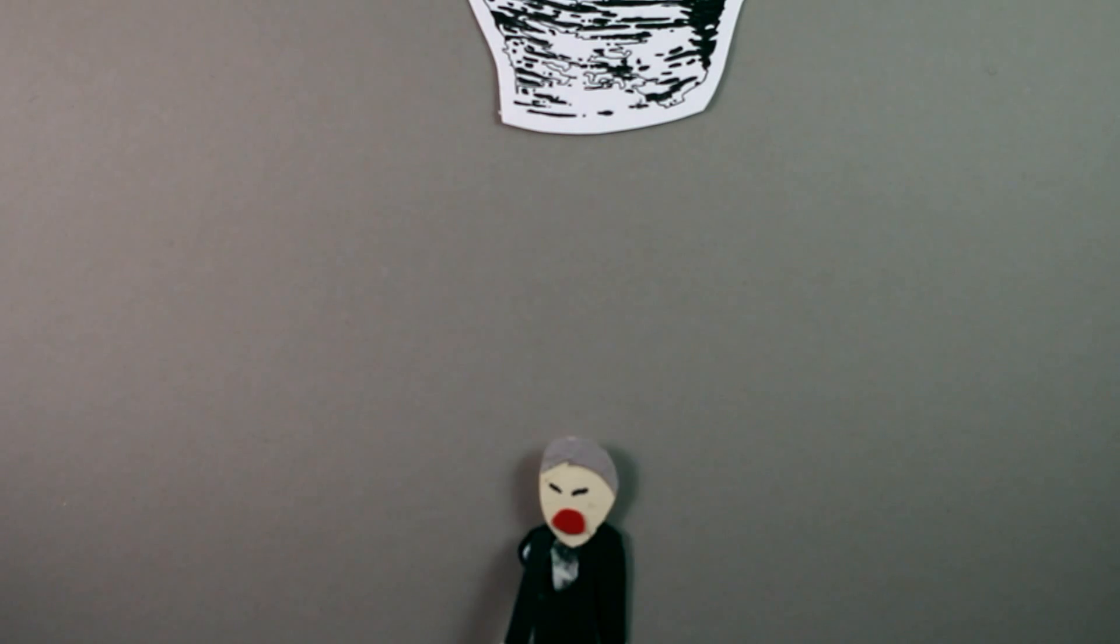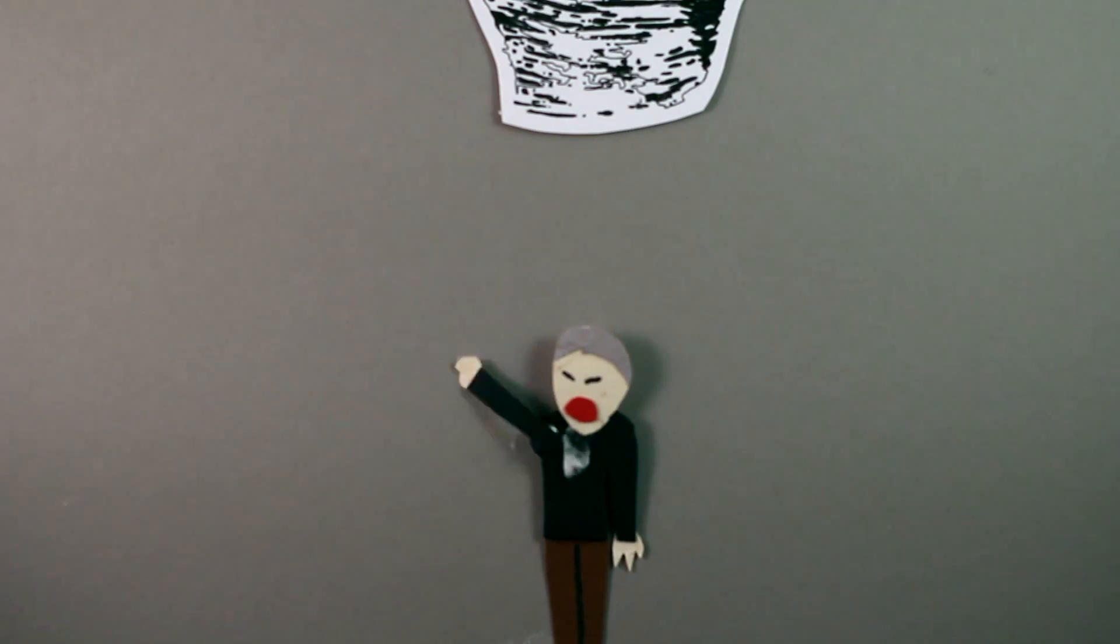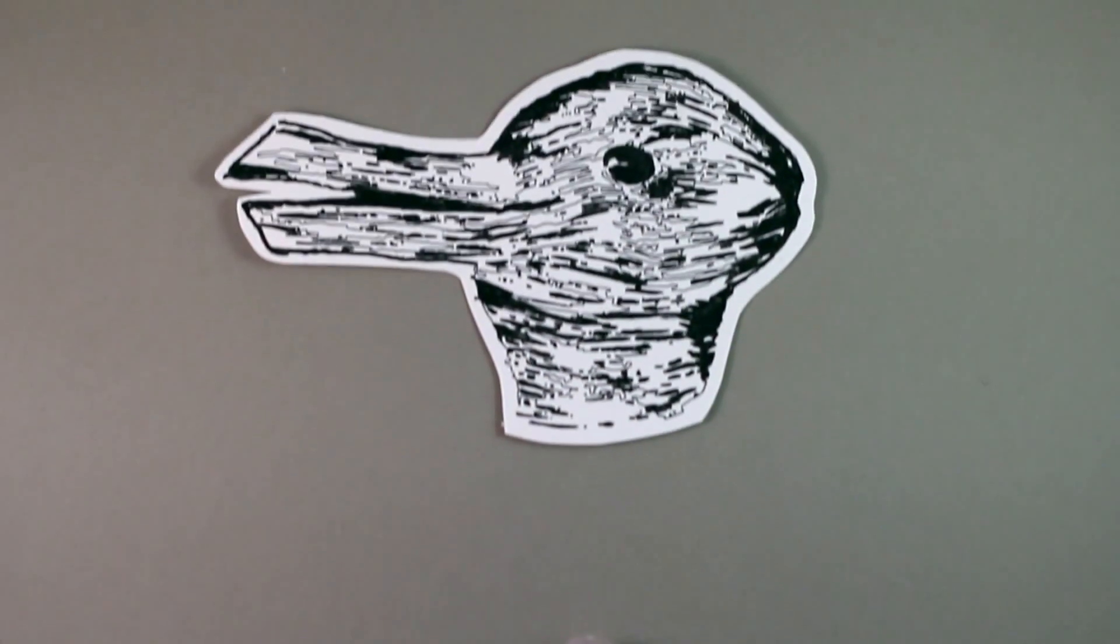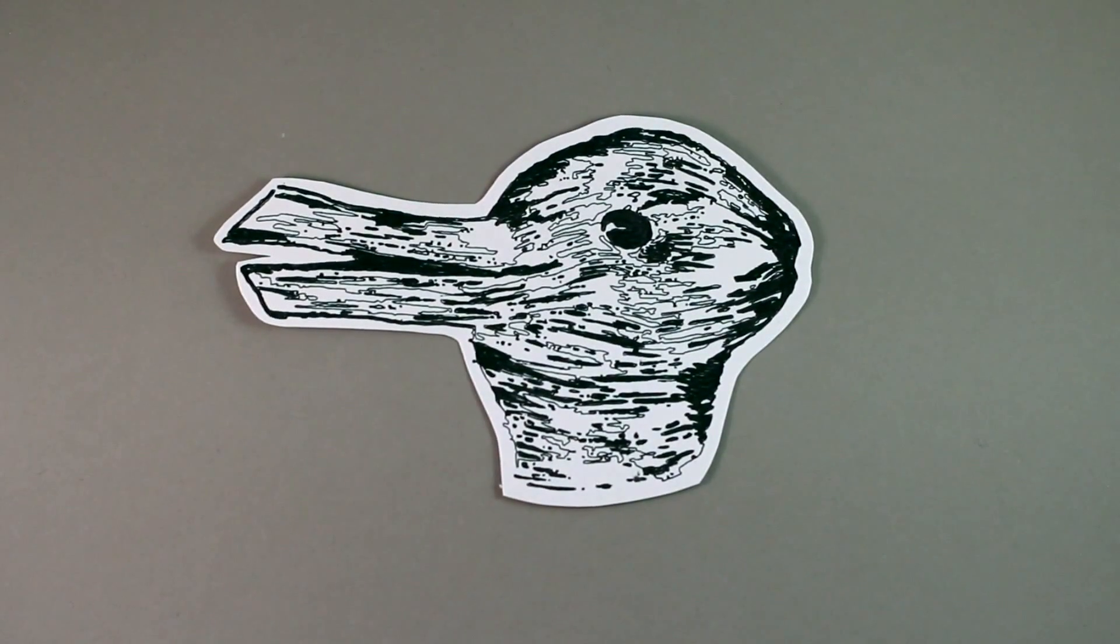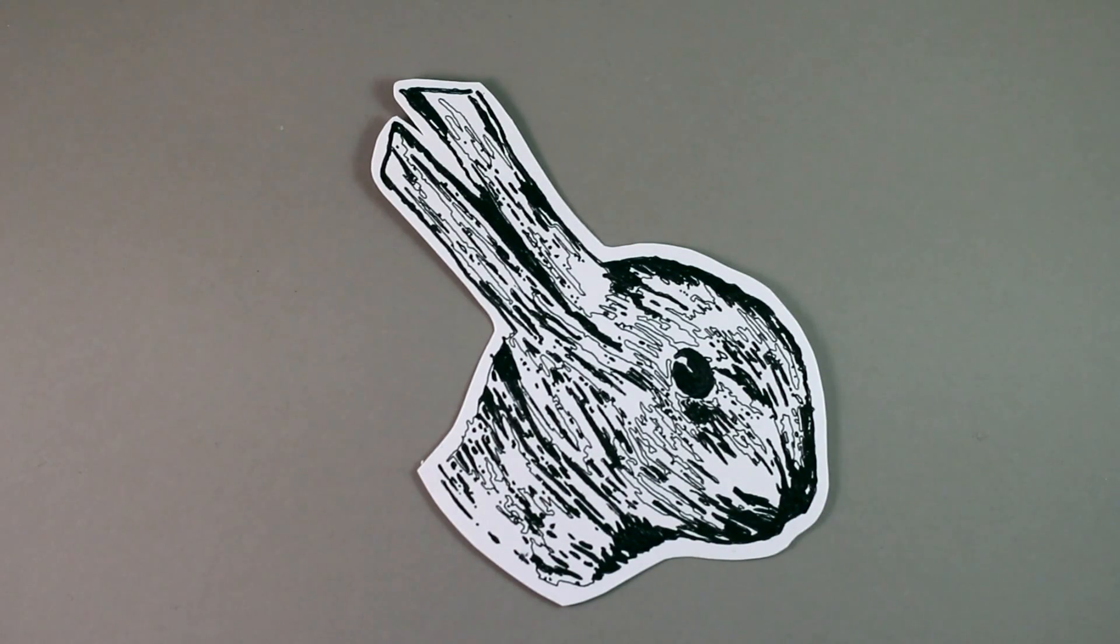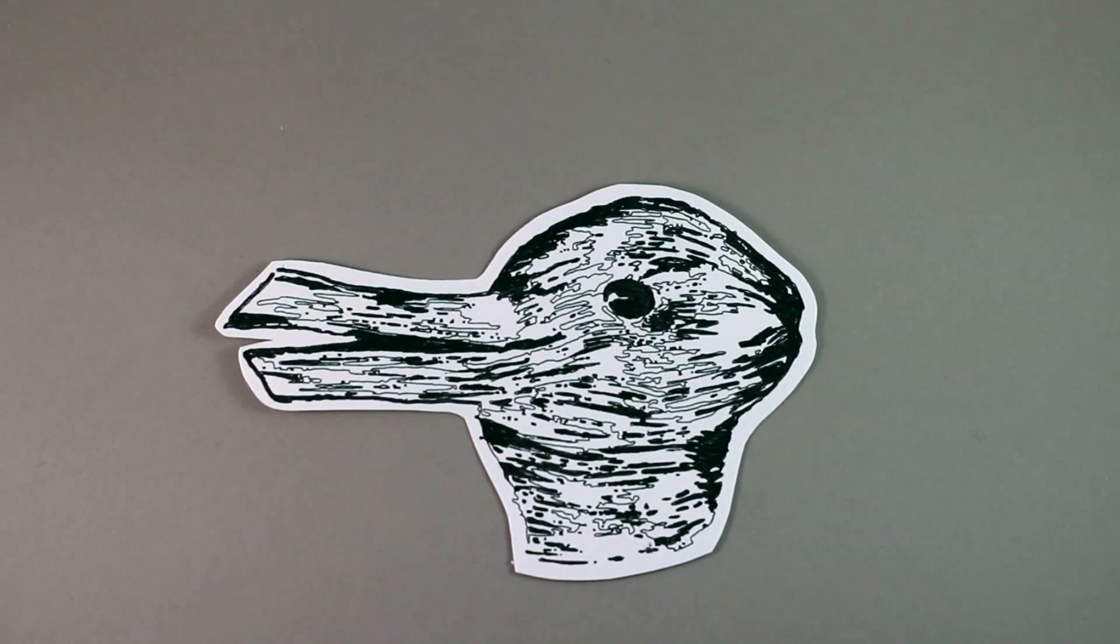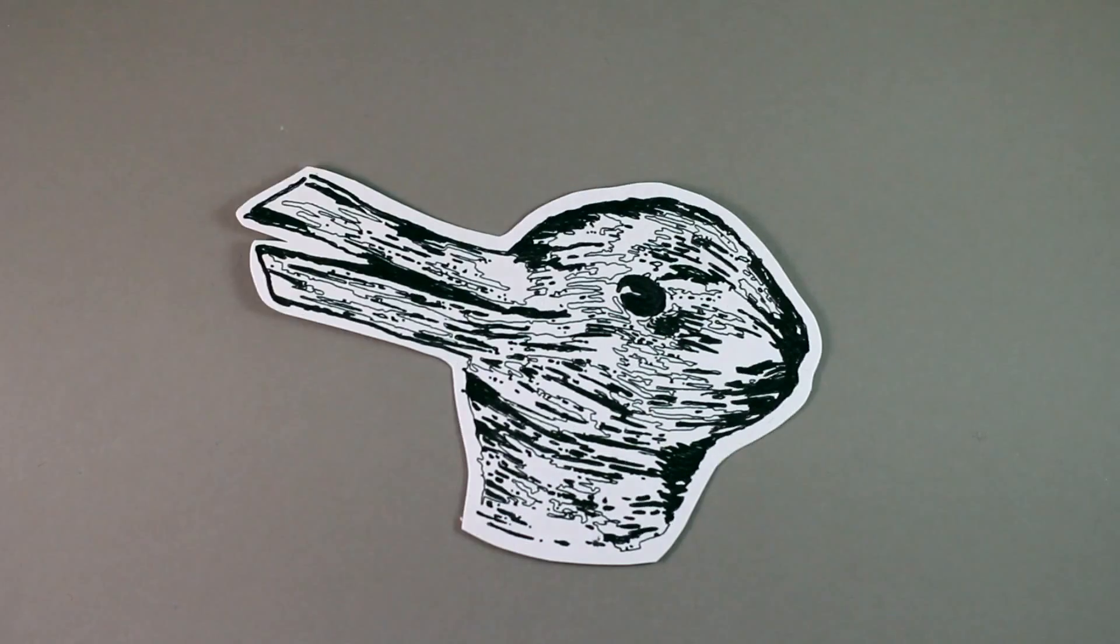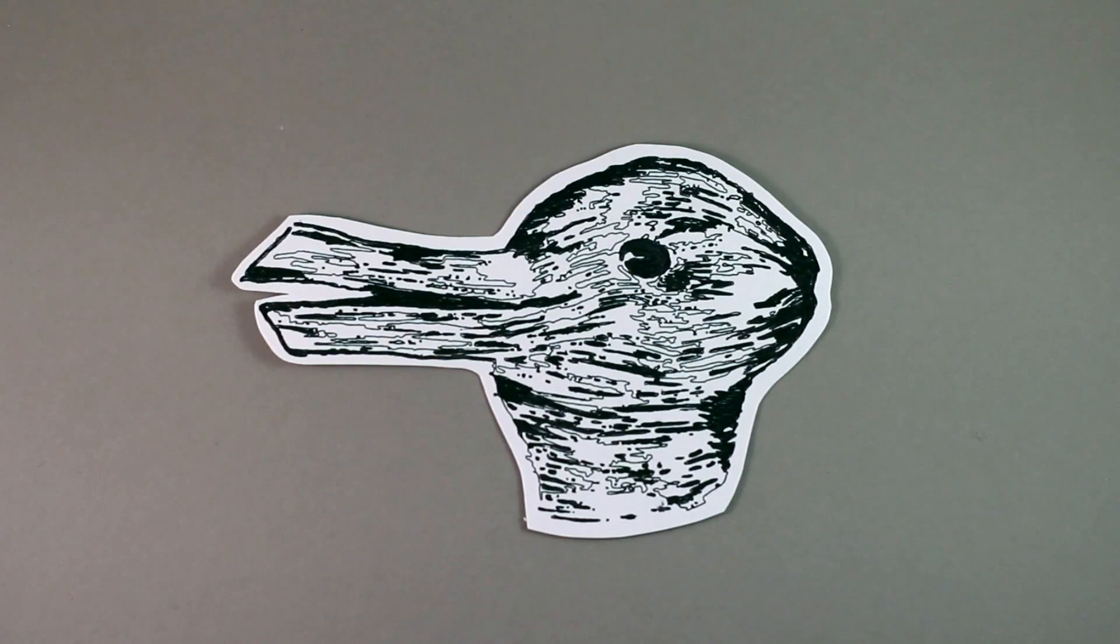Back in the mid-1800s, American psychologist Joseph Jastrow illustrated this animal. Some of you will see a duck, others a rabbit, but not both at once. The image itself allows for both interpretations and switching between them involves some mental effort.